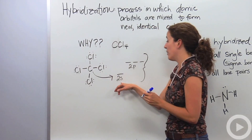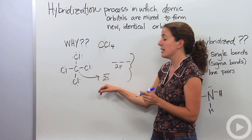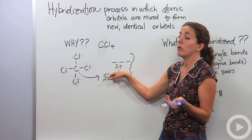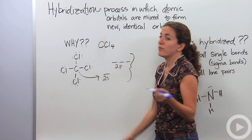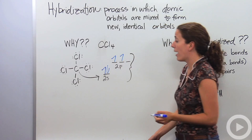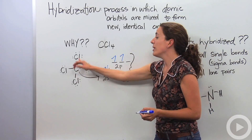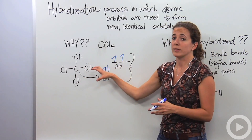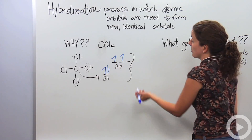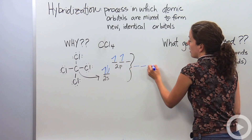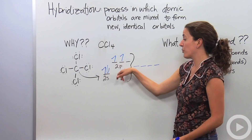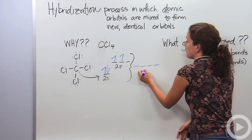When you look at the orbitals that carbon has in the valence shell, we have a 2s orbital and three equal-in-energy p orbitals. Carbon has four electrons. We want four equal places where chlorine can come in and bond with this carbon. So we're going to hybridize all these orbitals to make four equal-in-energy orbitals — one from s and three from p — so we call them sp3.